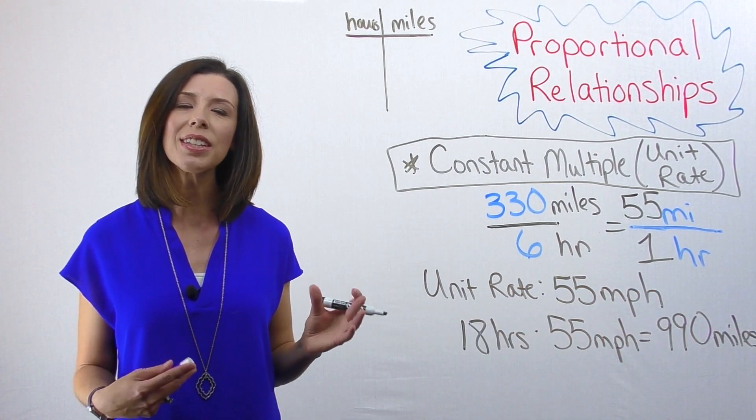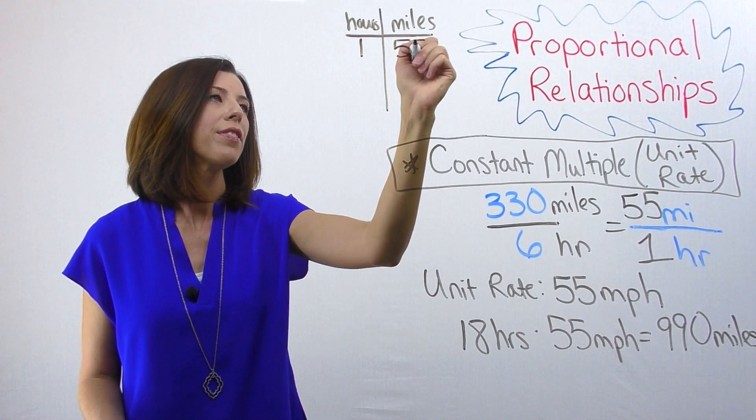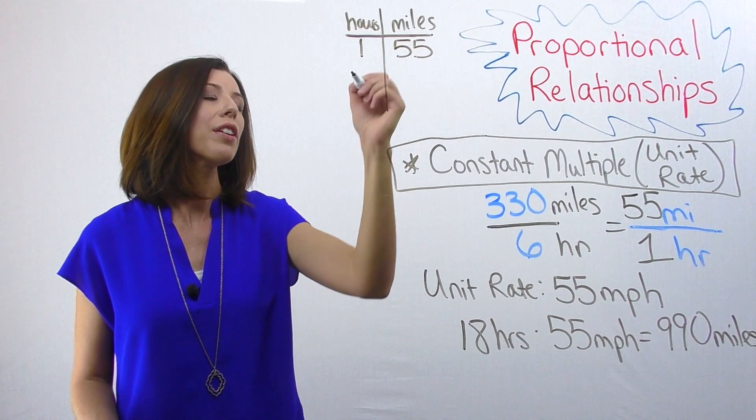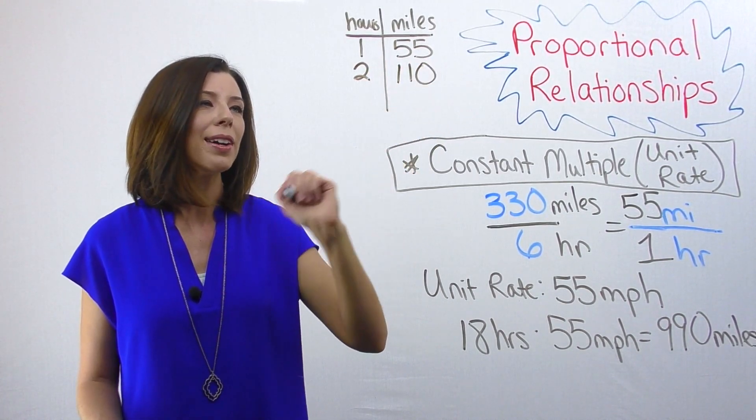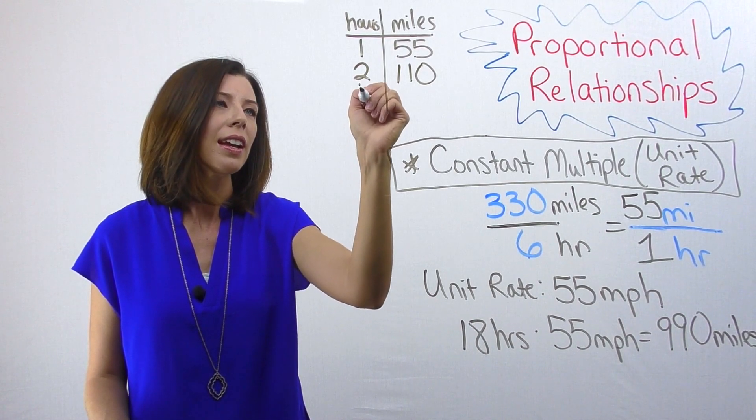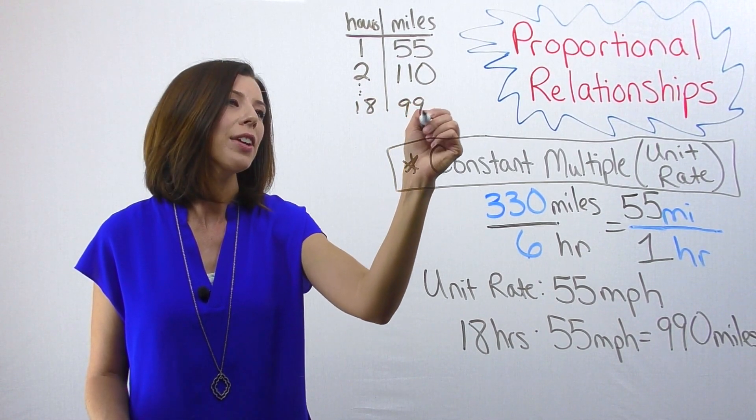Again, I can look at this on a T-chart and say, okay, for every one hour he drives, he drives 55 miles. So therefore, in two hours he drives 110 miles. I can keep on going and figure out that in 18 hours he drives 990 miles.